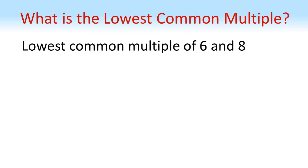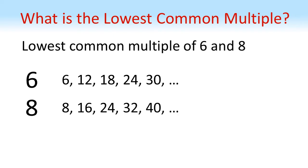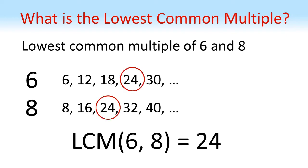For example, if we wanted to find the lowest common multiple of 6 and 8, we could list the first few multiples of 6: 6, 12, 18, 24, 30, etc., and the first few multiples of 8: 8, 16, 24, 32, 40, and so on. The lowest number that both lists have in common is 24, so the lowest common multiple of 6 and 8 is 24.